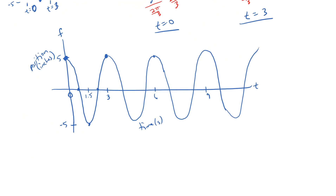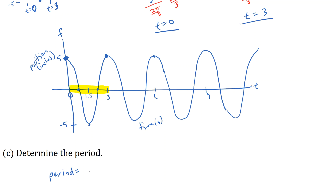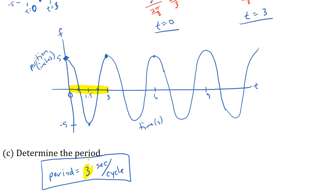Now let's determine the period of this function. The period is the length of one cycle. We can see that it took three seconds to move through a full cycle — from five inches above, down to five inches below, and back up to five inches above. So the period equals three seconds per cycle.